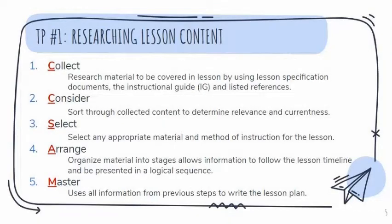Each step is divided into five steps for each of the five letters. The first step involves collecting research material — you collect all research material that will be covered in the lesson using lesson specification documents such as the QSP, the instructional guide, and listed references. The second step is to consider all of the resources you have acquired, sorting through the collected content to determine if it is relevant to your lesson and current.